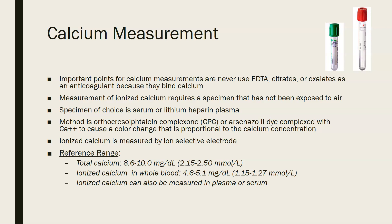Measurement of ionized calcium requires a specimen that has not been exposed to air, so the tube must remain closed. The accepted specimens are serum or lithium heparin plasma. The method uses ortho-cresolphthalein complexone (CPC) or the arsenazo III dye, which forms a complex with calcium causing a color change proportional to the calcium concentration — the color change is red, read by a spectrophotometer. Ionized calcium is measured using an ion-selective electrode.